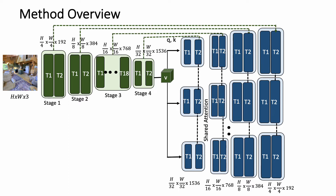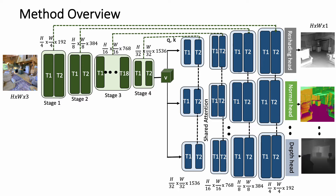Additionally, in the decoder, we develop a shared attention mechanism that integrates the information contained in the encoded features into the decoding stream. Finally, these decoded features are leveraged by the different task heads to predict the task-specific outputs. The overall model is jointly trained in a supervised manner, using a weighted loss of all the tasks involved.